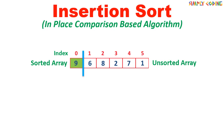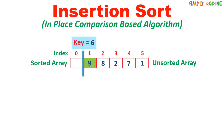Coming back to Insertion Sort, the way it works is that it picks up the first member of the unsorted array and creates a copy of it in variable key. It then starts comparing backwards with the sorted array. If the value is greater than the number, then it is just shifted down. Here 9 is greater than 6, so it is shifted down. It continues doing this till it finds a lesser value or the end of sorted array is reached. Here we have reached the end of sorted array, so now key is copied to the first empty space. This completes the first pass.